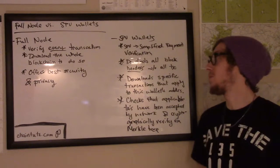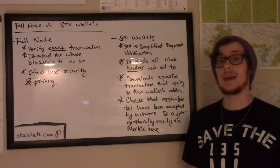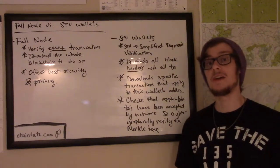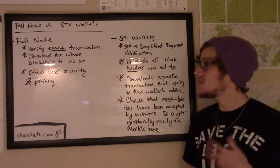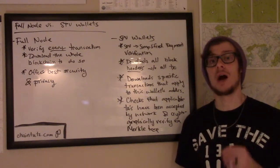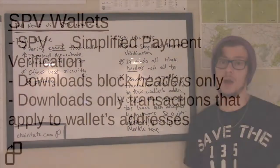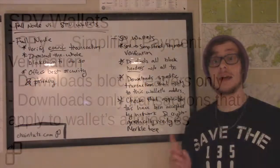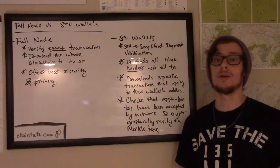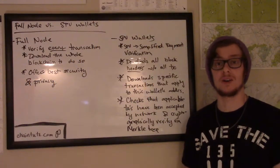Now contrast this with SPV wallets. SPV stands for Simplified Payment Verification. These wallets only download the block headers for all of the blocks in the blockchain. This amount of data is about a thousand times smaller than downloading the full blockchain, so it's great for running on pieces of hardware that have limited capacity, like smartphones or smaller netbooks.